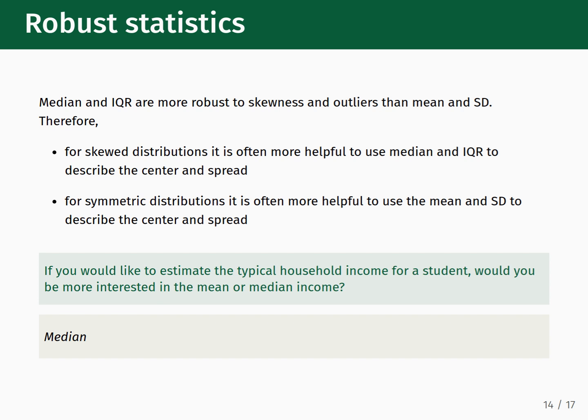Therefore, if you are dealing with a skewed distribution, it is often more helpful to use the median and IQR measures to describe the center and spread. If instead you are dealing with a symmetric distribution, it is often more helpful to use the mean and standard deviation to describe the center and the spread. So, if you would like to estimate the typical household income for a student, would it be better to look at the mean income or the median income? Since, as we saw in the prior example, that incomes are a very skewed distribution, we would prefer to look at the median income.